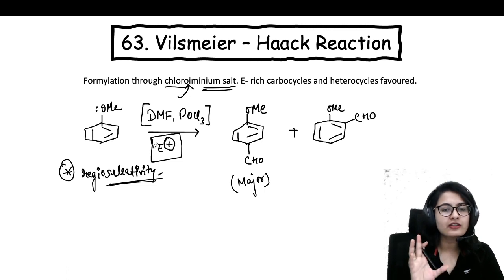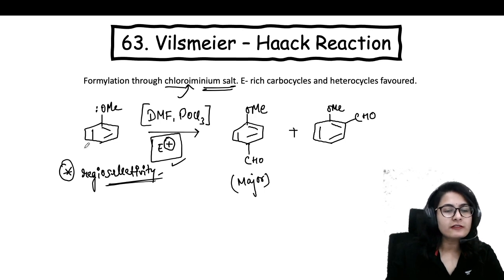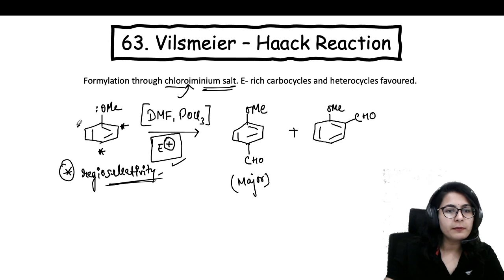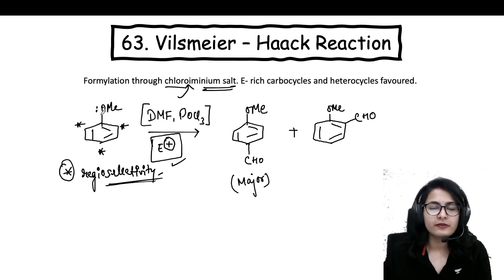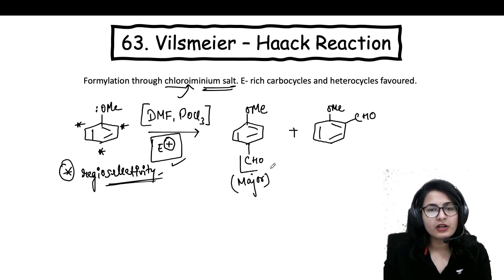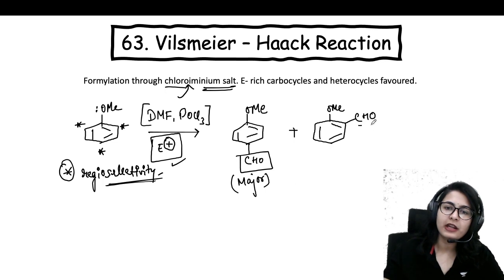This reaction is overall electrophilic aromatic substitution. Which is the most favored position in this anisole molecule? Ortho and para. Ortho and para positions are more favored, and because of less steric hindrance, the best position for electrophile addition will be the para position. So the para product is your major product, and the ortho is minor.